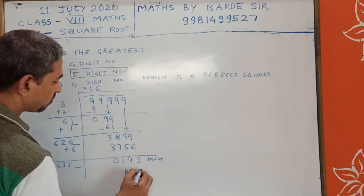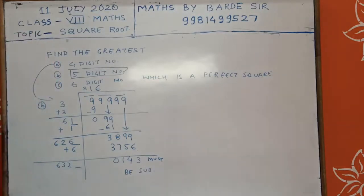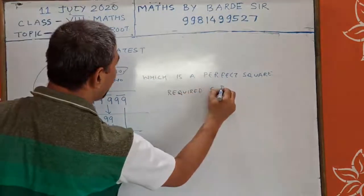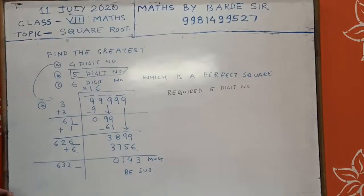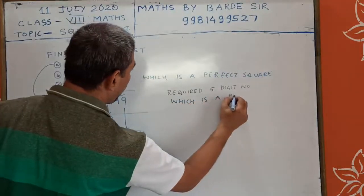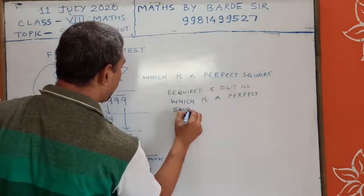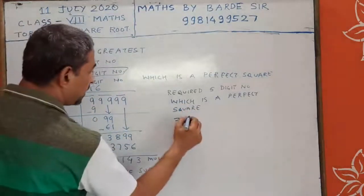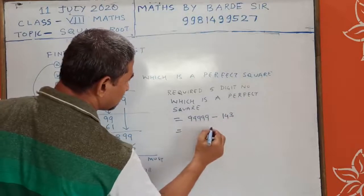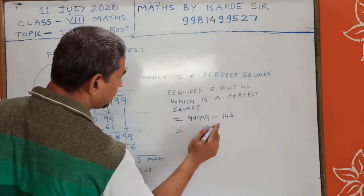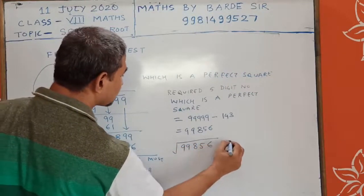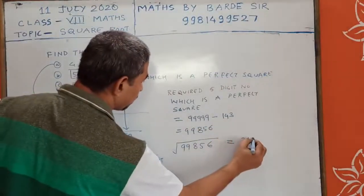So 143 must be subtracted. The required five-digit number which is a perfect square is 99,999 minus 143 equals 99,856, and the square root of 99,856 equals 316.